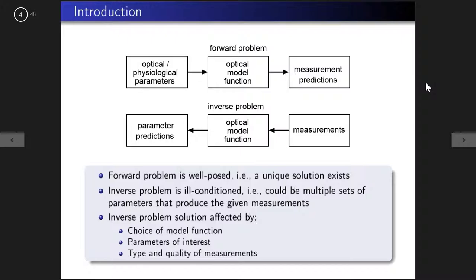You've seen this diagram in different forms throughout the week. We have the forward problem: optical or physiological parameters — optical absorption or scattering — are fed into an optical model, and the output is predictions of your measurements. The inverse problem takes those measurements, uses a model, and determines what the optical physiological parameters are. As Jerry mentioned, the forward problem is well posed — a unique solution exists — but often the inverse problem is ill-conditioned, meaning several sets of optical properties could produce the same measurement predictions.